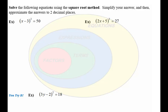We're going to solve the following equations using the square root method, practicing with the plus or minus notation and simplifying and approximating our answers. We want to notice that we have a perfect square term on the left side, so we can apply the square root property, which is taking the square root of both sides.